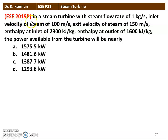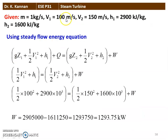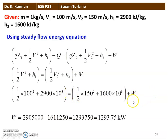The next question from the 2019 question paper — in a steam turbine with steam flow rate 1 kg/s, inlet velocity 100 m/s, exit velocity 150 m/s, inlet enthalpy 2900 kJ/kg, outlet enthalpy 1600 kJ/kg, the power available from the turbine is 1293.8 kW. Applying the steady flow energy equation: (1/2)V1² + H1 = (1/2)V2² + H2 + W. Substituting: (1/2)(100²) + 2910³ = (1/2)(150²) + 1610³ + W. Rearranging gives W = 1293.75 kW.